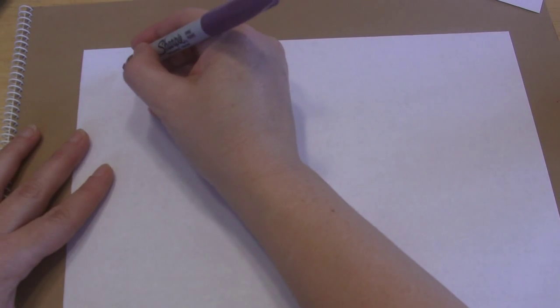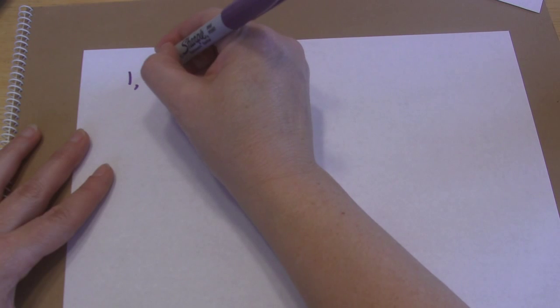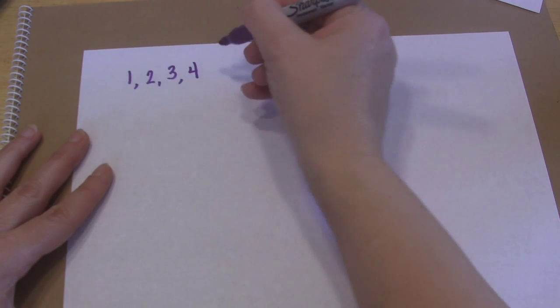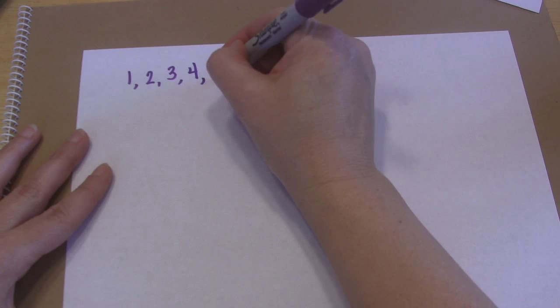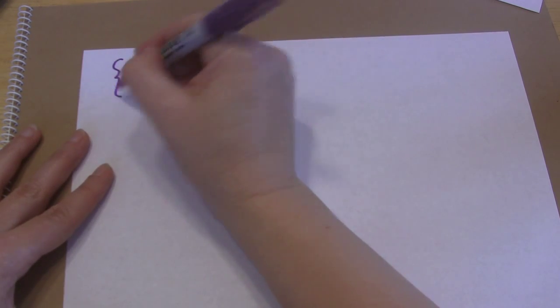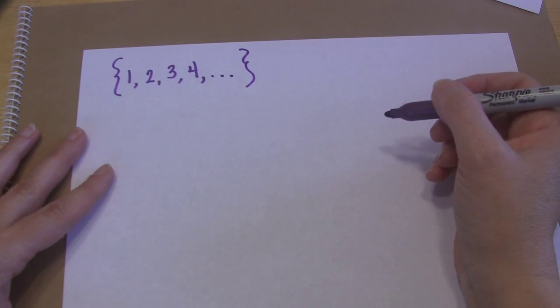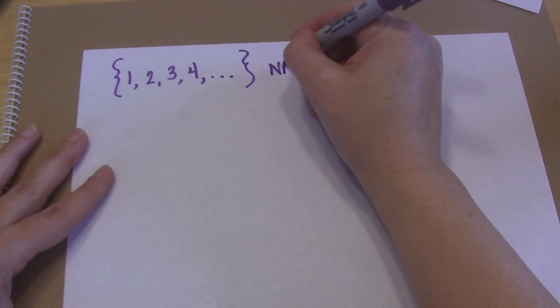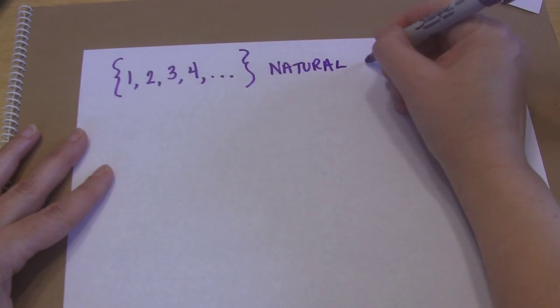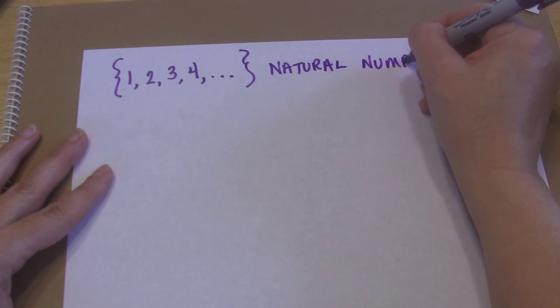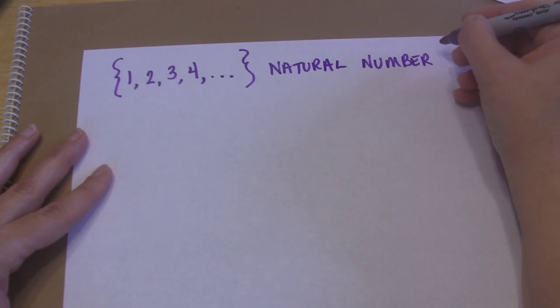Now for our purposes today, we are going to learn about three important sets of numbers, and we're going to do it in the same way that you learned them as a child. So when you were very young, you started learning to count like this: one, two, three, four, and so on. If we were to make all of those a set of numbers, they would be called the natural numbers. This is your first important number set that you need to know.